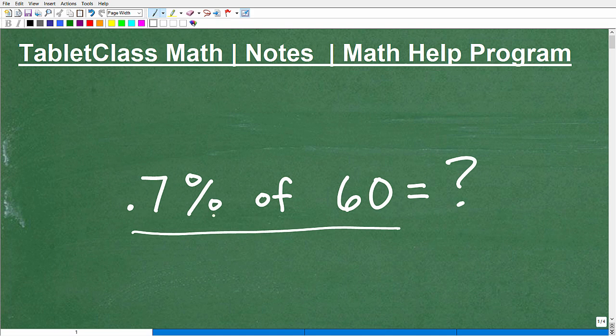And what we don't want to do in a problem like this is say, well, I know I have to do something with this number and this number. So like, hmm, what could I do? Well, I could multiply these numbers, divide these numbers this way. Maybe I could take the 0.7 and divide it by 60. What we don't want you to do is guess. That's not the point here. I want you to walk away from this video with absolute certainty on how to handle a basic percent problem.